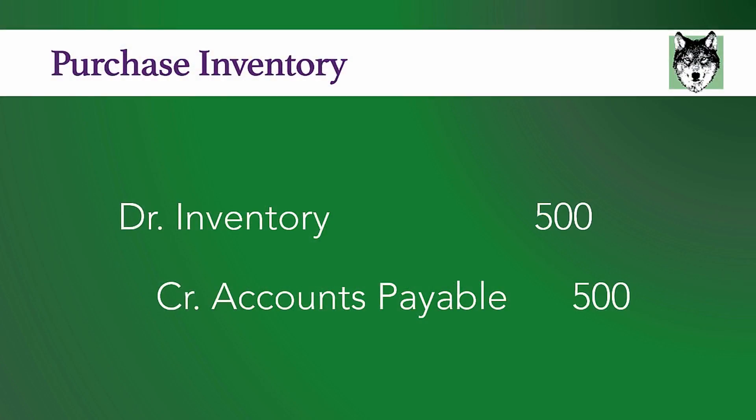Let's go through a couple of journal entries to talk through how this concept works. Starting with an easy one — purchasing inventory. We're going to debit inventory and credit accounts payable. Debiting inventory increases the assets on the asset side of the balance sheet. Crediting accounts payable increases the accounts payable on the liability side of the balance sheet. So we're increasing an asset and increasing a liability, which is a claim against our assets. It all plays out in how the debits and credits work in the journal entry.